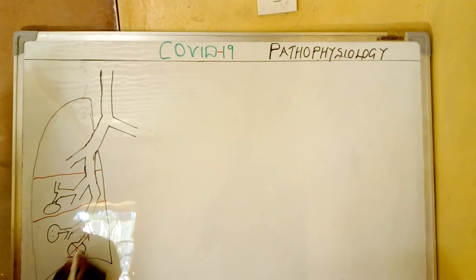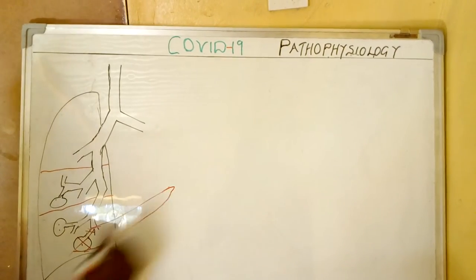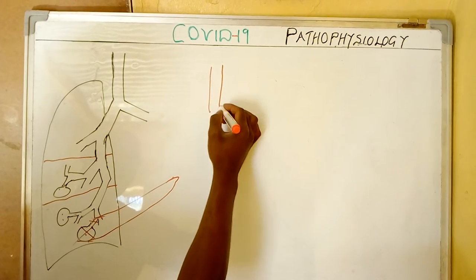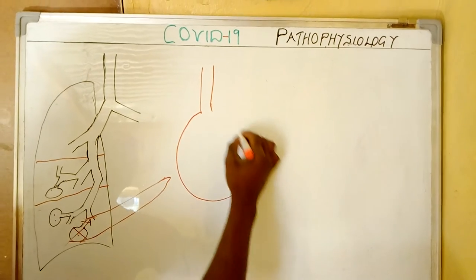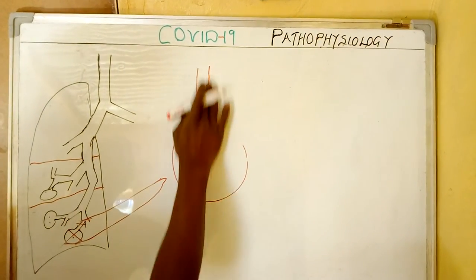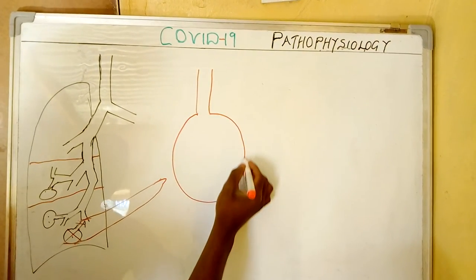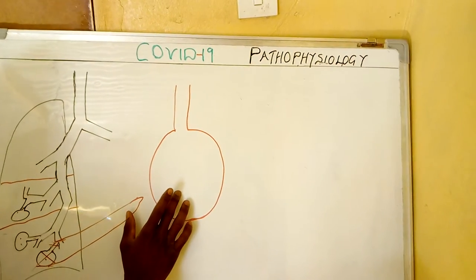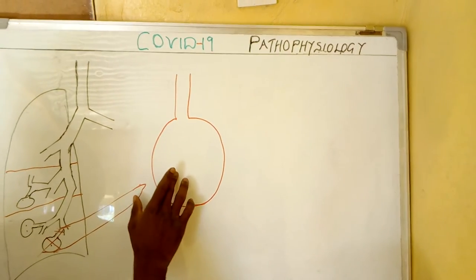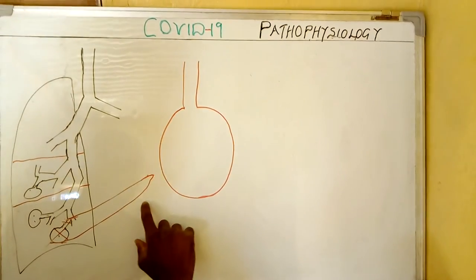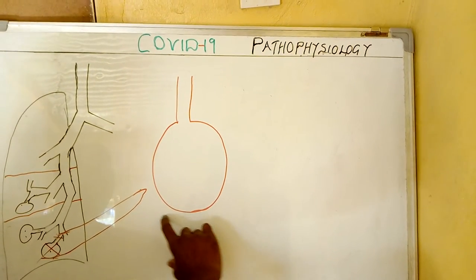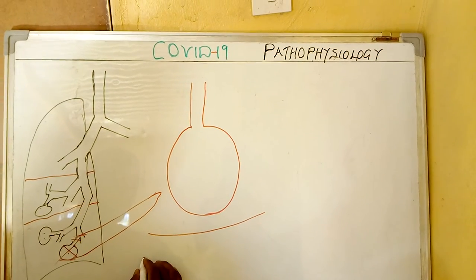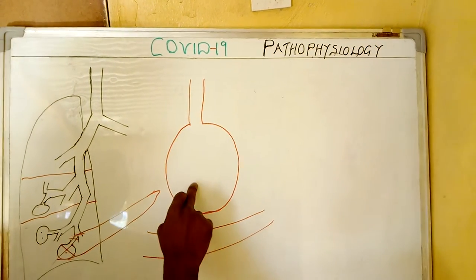So we are going to bring an alveolus outside here. We are saying that this is a bronchiole, and this is the alveoli. Inside the air sac — which we are calling as the alveoli wall — we have a membrane. Just down here, we have a blood vessel, a capillary blood vessel, the one responsible for gaseous exchange. So inside this alveoli, we have got cells.